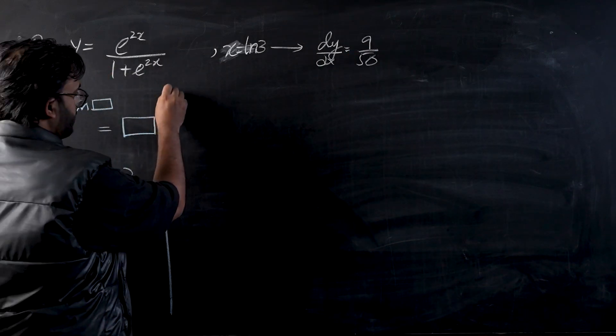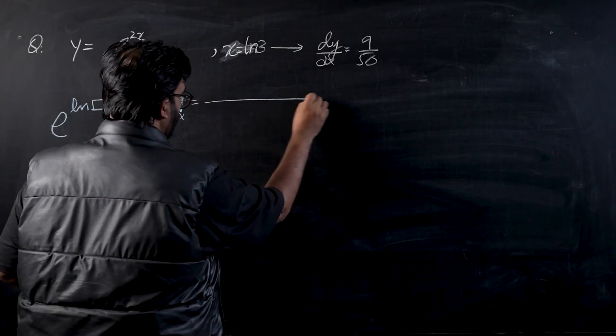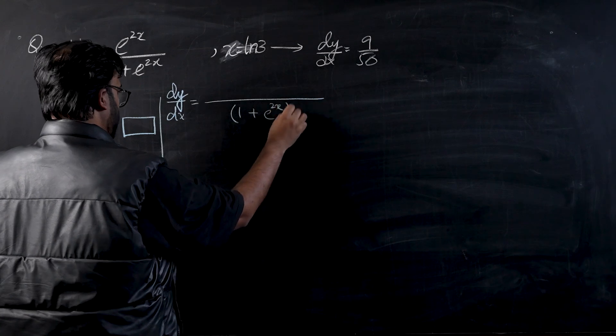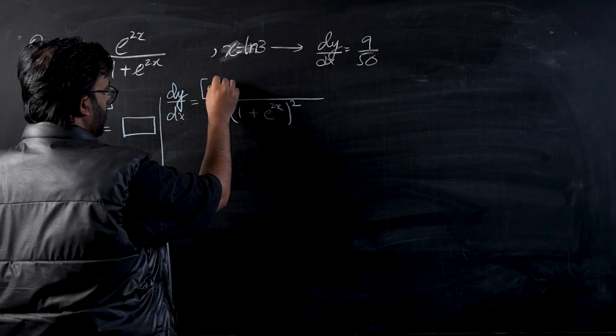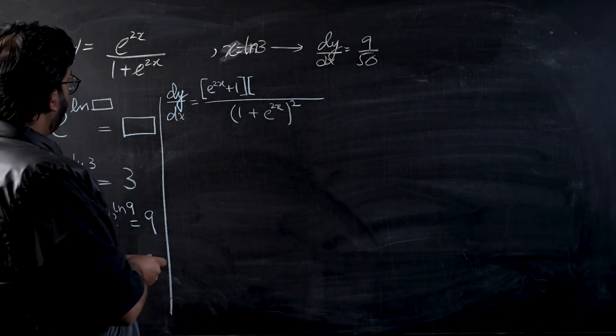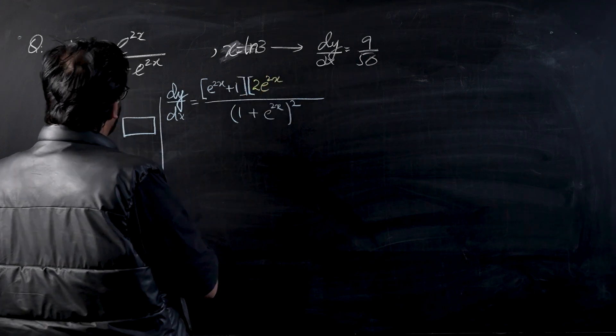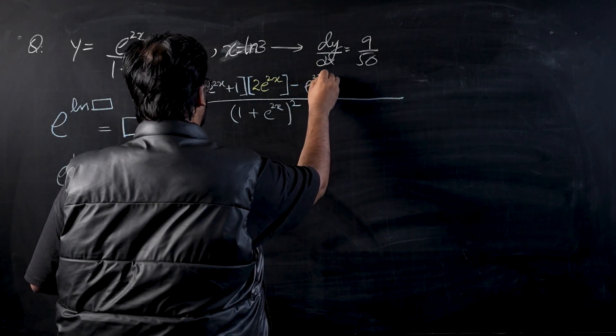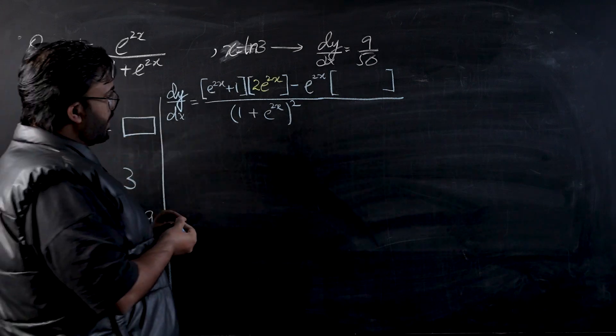So first of all, let's start by the basic differentiation. We can see it's a quotient rule, it's a fraction, so I'm going to apply the quotient rule. The denominator would become 1 plus e raised to power 2x whole squared. The numerator would be 1 plus e raised to power 2x times differentiation of the numerator, and that would be 2 times e raised to power 2x.